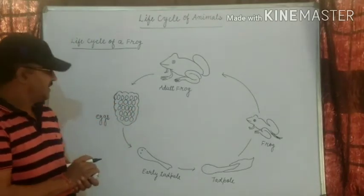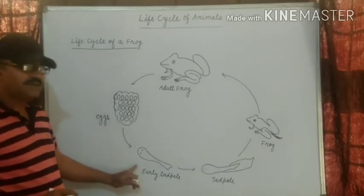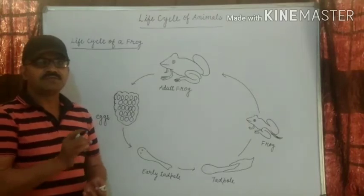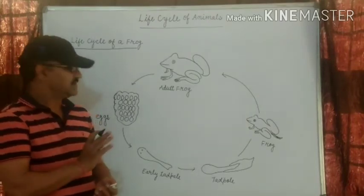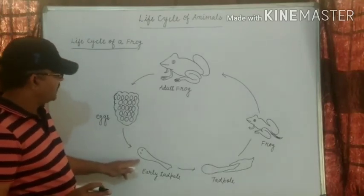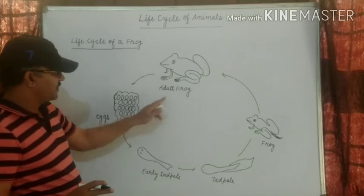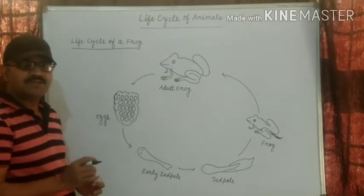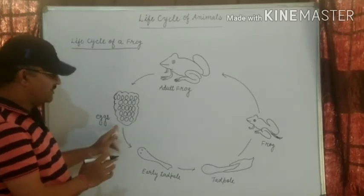Next stage — early tadpole. The baby frog, called a tadpole, comes out of the eggs in about 3 weeks. The baby frog is known as the tadpole. It comes out in 3 weeks from the eggs.